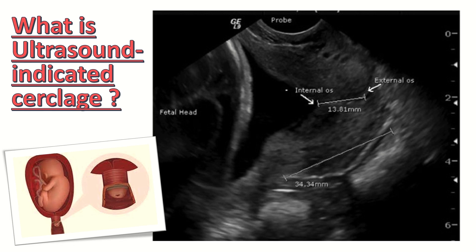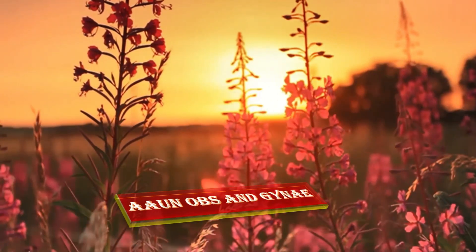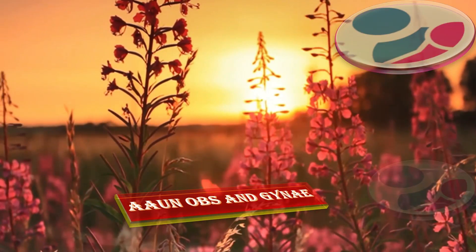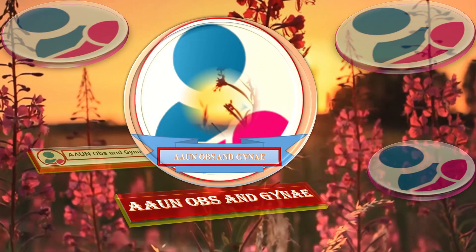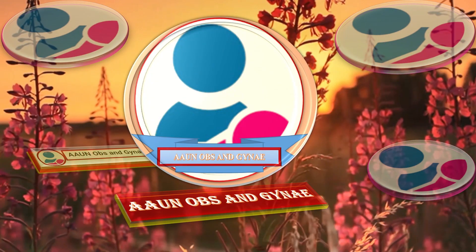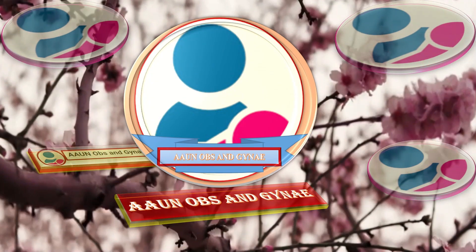Ultrasound-indicated cerclage is the insertion of cerclage as a therapeutic measure in cases of cervical length shortening seen on transvaginal ultrasound. Sonography is usually performed between 14 to 24 weeks of gestation. Thank you for watching — subscribe to Obs and Gyne and follow the Facebook page.